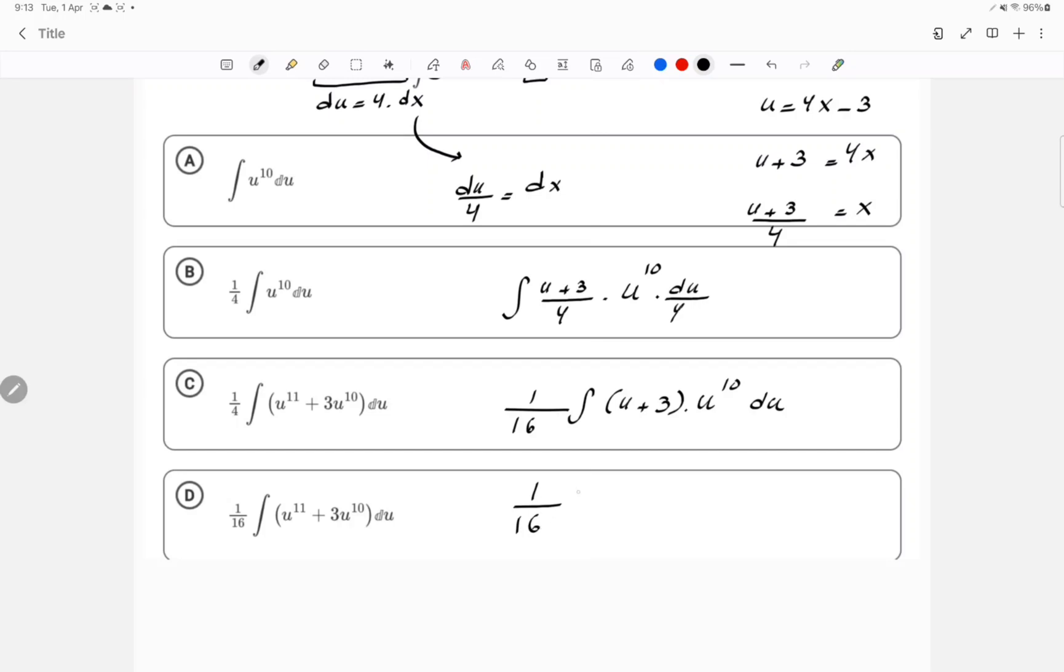Now, if you continue the expansion, you're going to have u to the power of 11 plus 3u to the power of 10, the whole thing is going to be du. So, the answer is going to be choice D. Thank you.